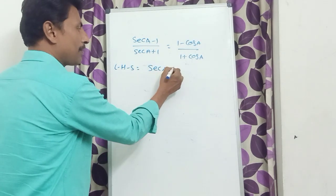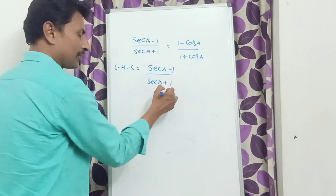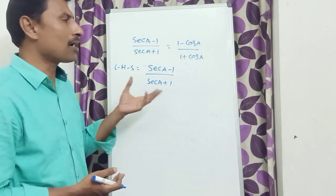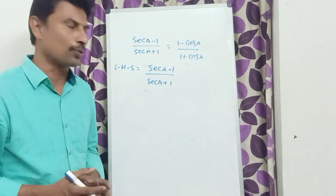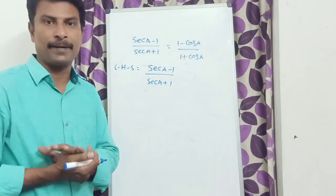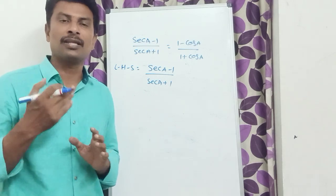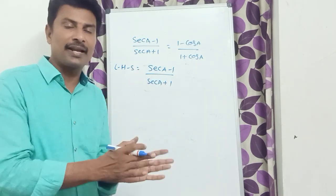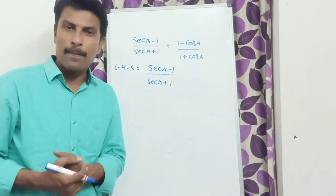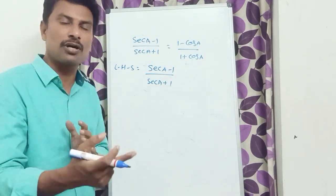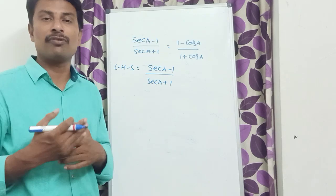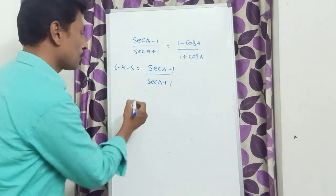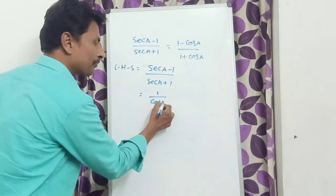First question: prove that (sec A − 1)/(sec A + 1) = (1 − cos A)/(1 + cos A). Starting with LHS: (sec A − 1)/(sec A + 1). Our required answer is in terms of cos, but LHS is in terms of sec. Think about whether there is a relation between sec and cos — yes, sec A = 1/cos A. So replace sec A with 1/cos A: (1/cos A − 1)/(1/cos A + 1).